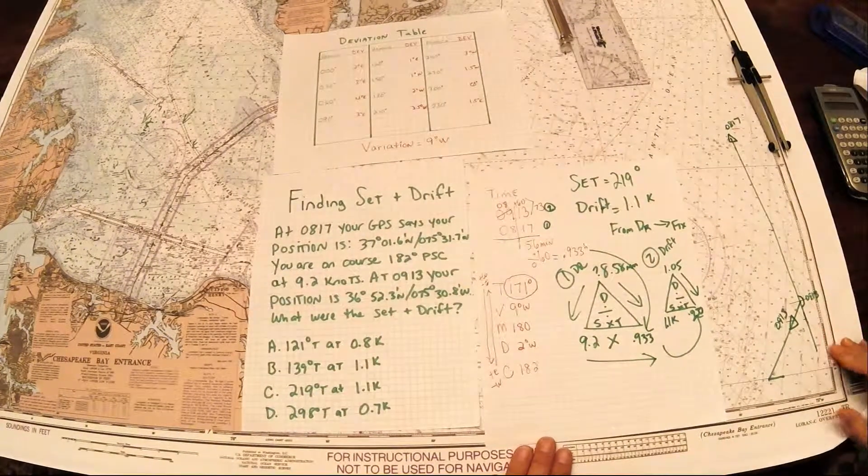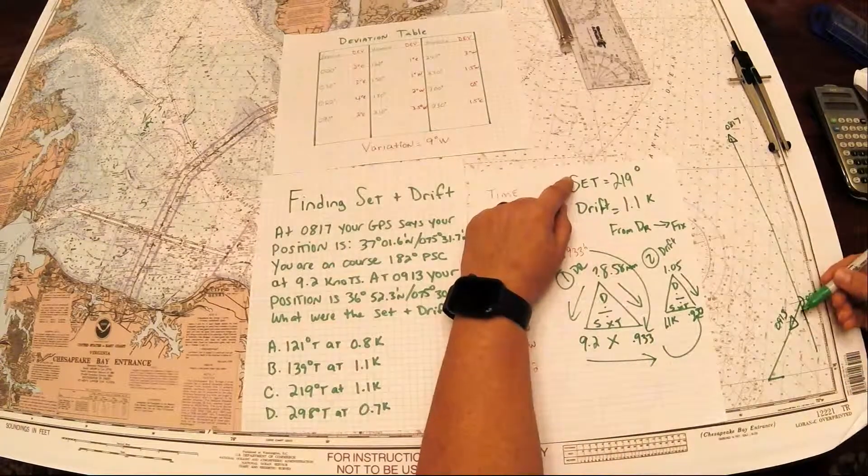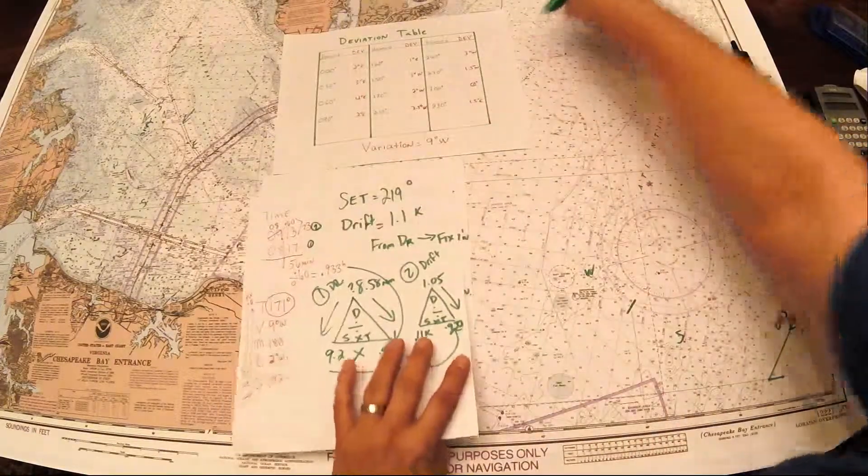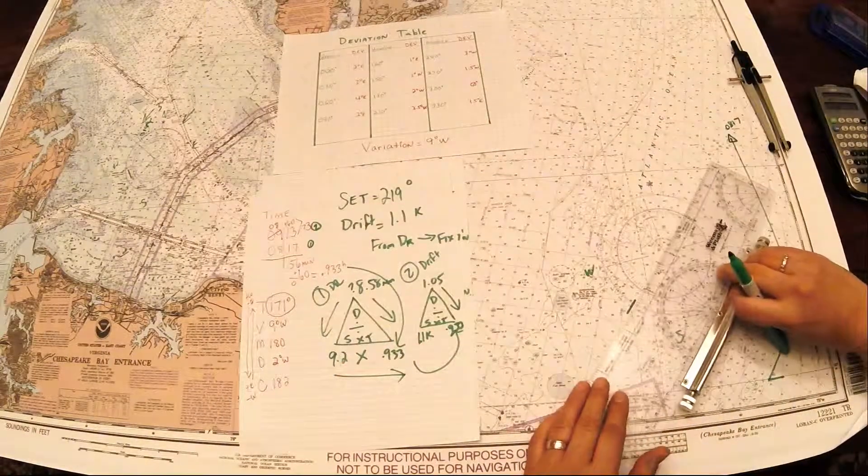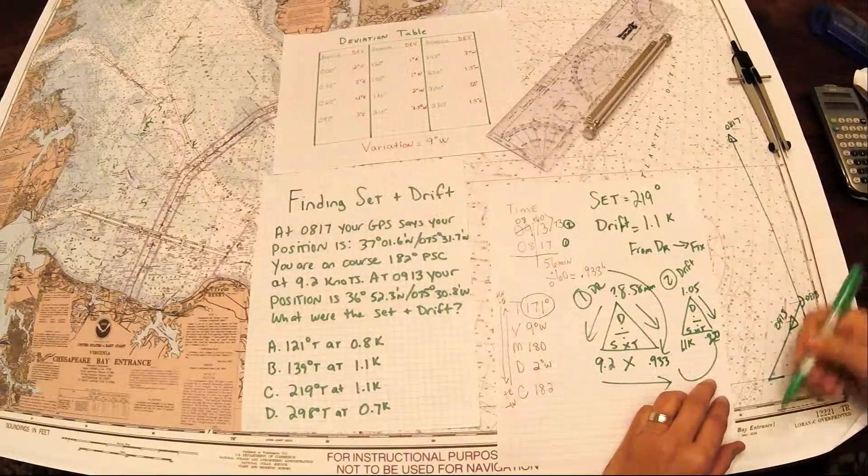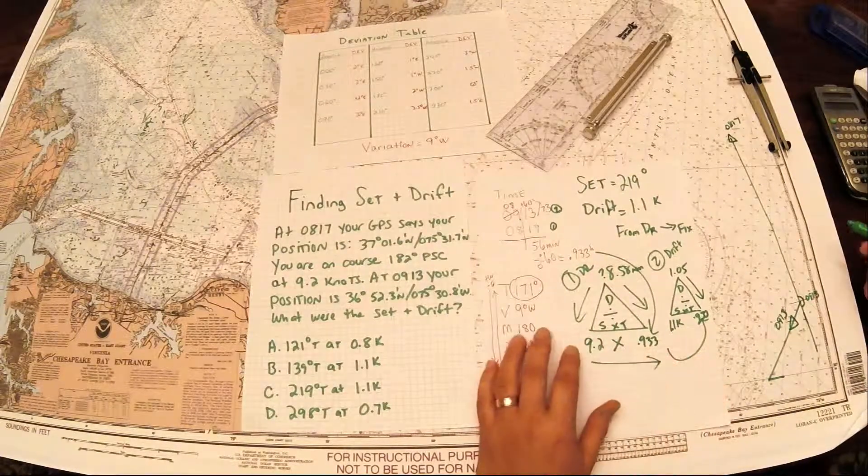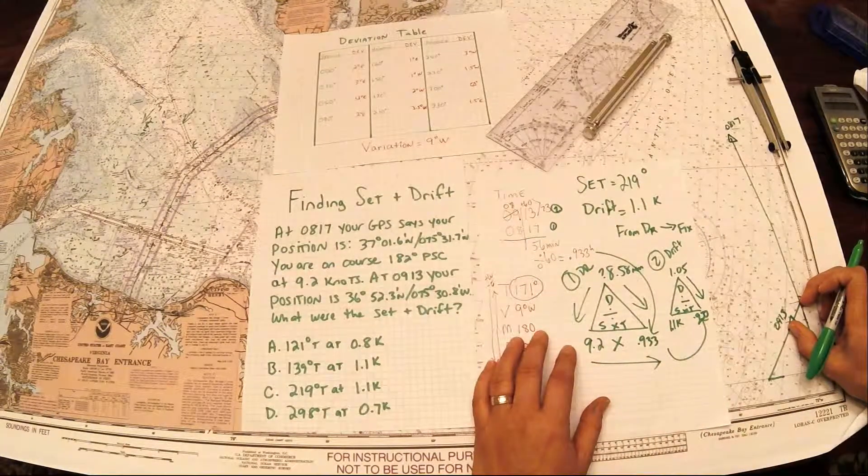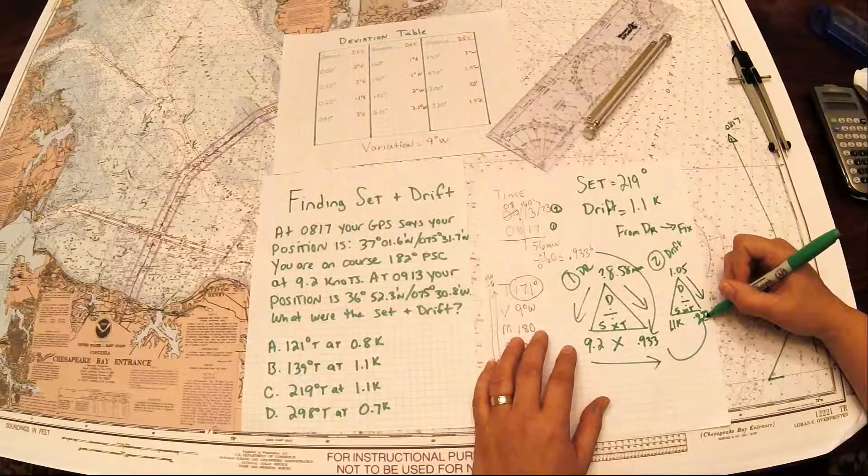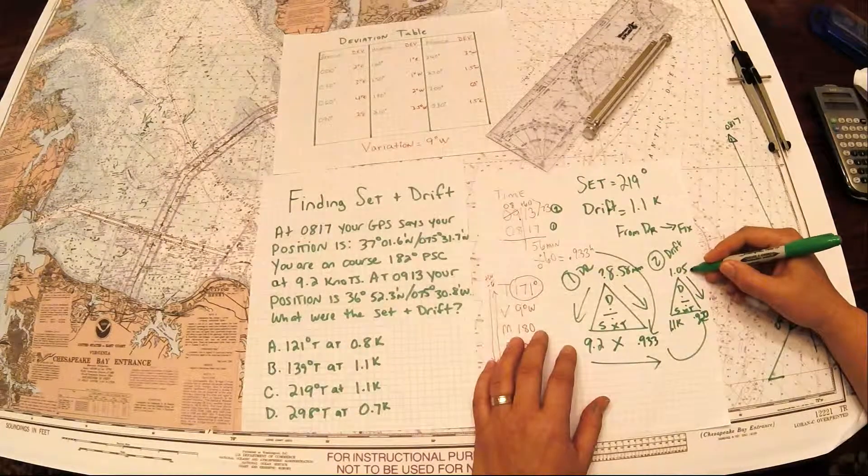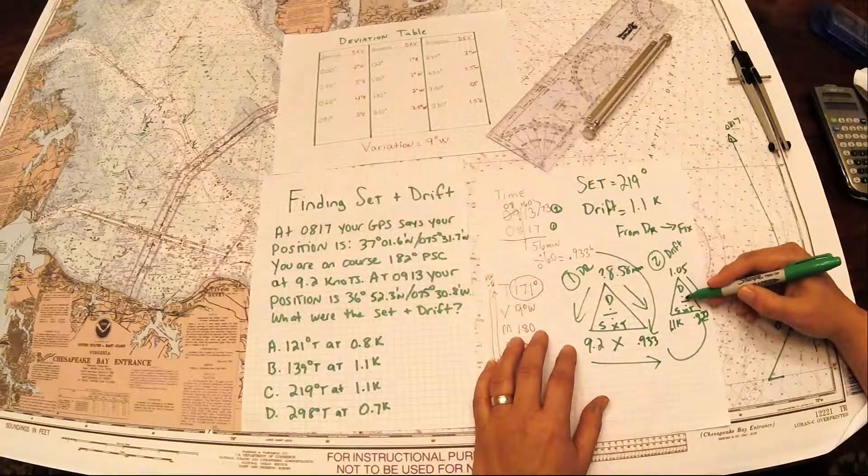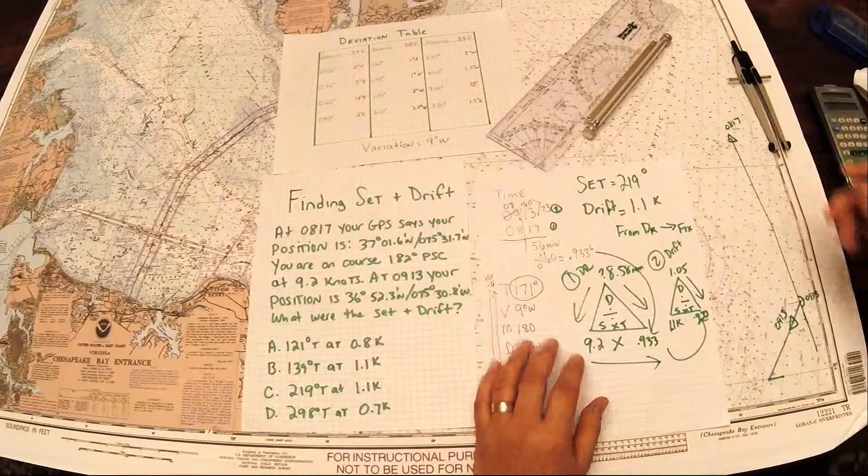Once I have that plotted, now I'm ready to solve. Set is the direction that I was pushed off and we said it was southwesterly. So I lined that up with my parallel plotter and I walked it over to the rose and it gave me 219. 219 is the degrees of set, the direction I'm pushed off. The drift is the distance pushed off. I put that in a DST and I'm going to divide it by the amount of time that passed by. So I was pushed off 1.05 nautical miles in 0.933 hours. Do the math, distance divided by time, and I get our speed of 1.1 knots.